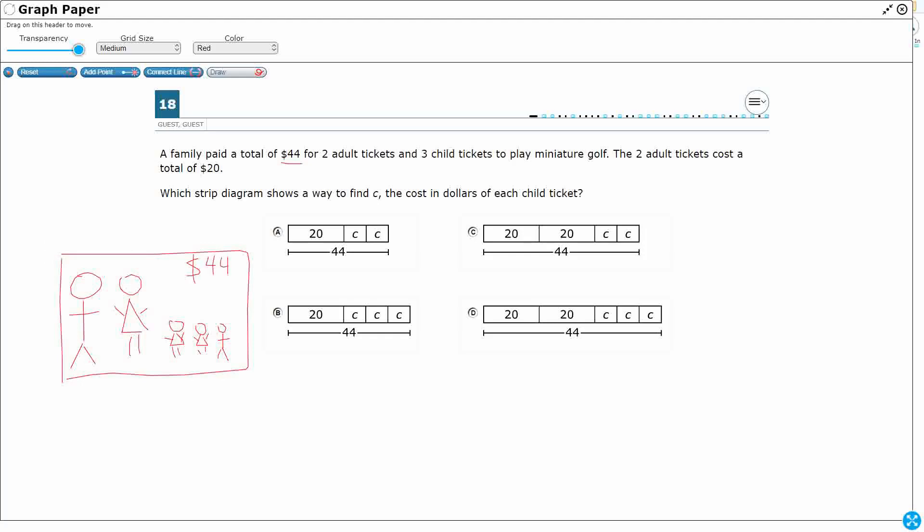Now, the two adult tickets cost a total of $20. So I'm going to draw a little line right here. It says those two cost $20. Which strip diagram shows a way to find C? So that's my unknown quantity, and sometimes we'll use a letter to figure out the unknown quantity, the cost in dollars for each child ticket.